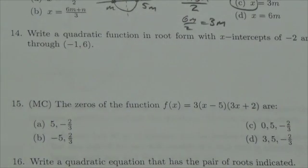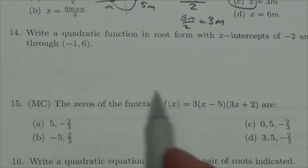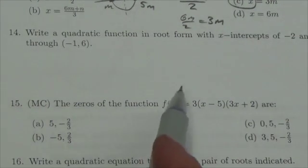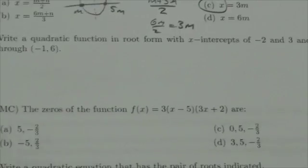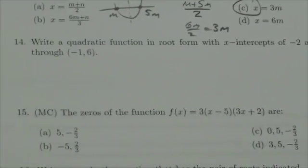Okay everybody, we're looking through the quadratic functions and equations review package here on question 14, which says write a quadratic function in root form with x-intercepts of negative 2 and 3, and it passes through the point negative 1, 6.